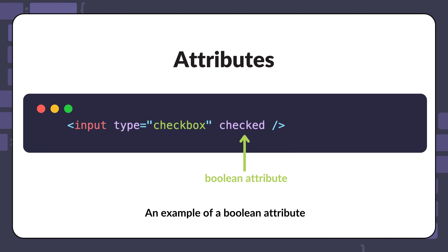There are several common Boolean attributes you will encounter in HTML, such as disabled, read-only, and required. These attributes are used to specify the state of an element, such as whether it is disabled, read-only, or required.